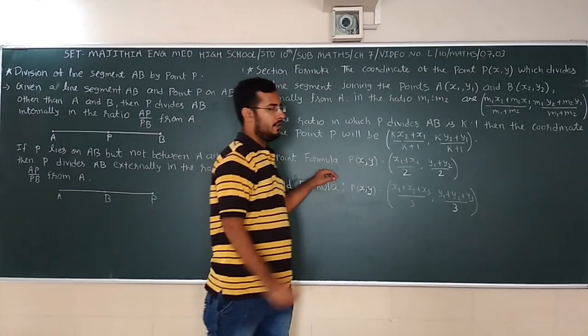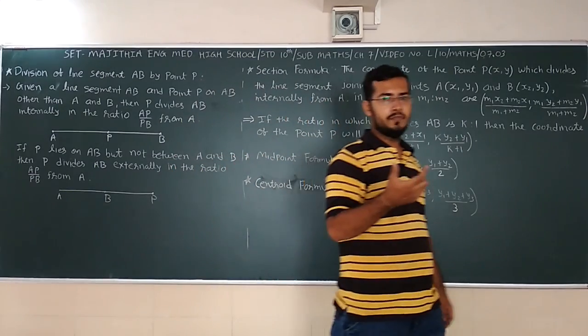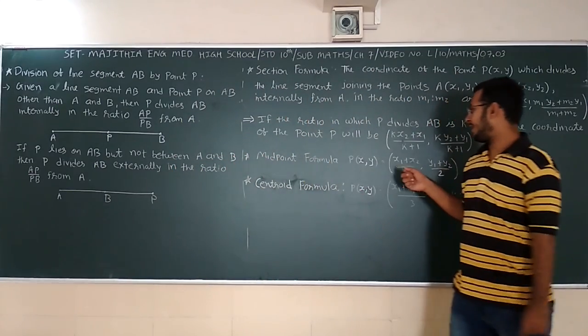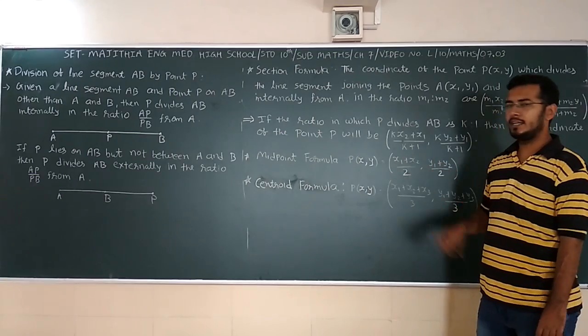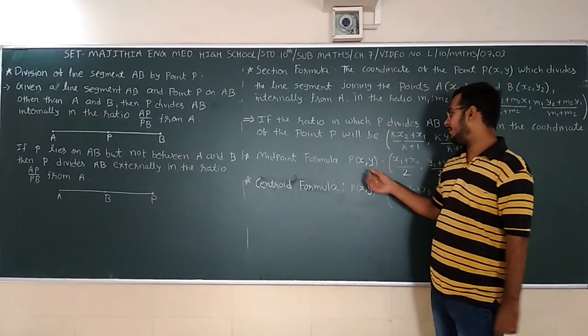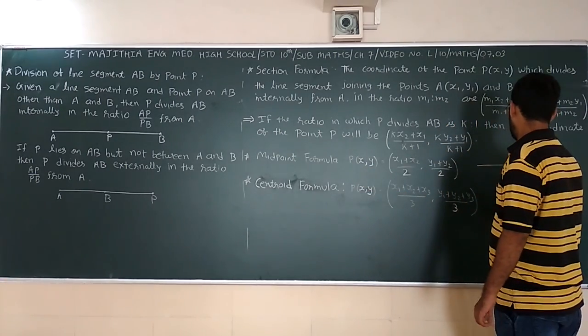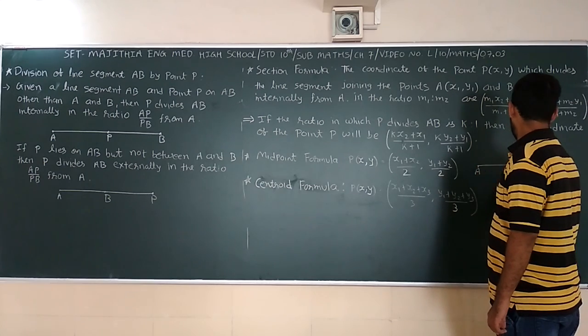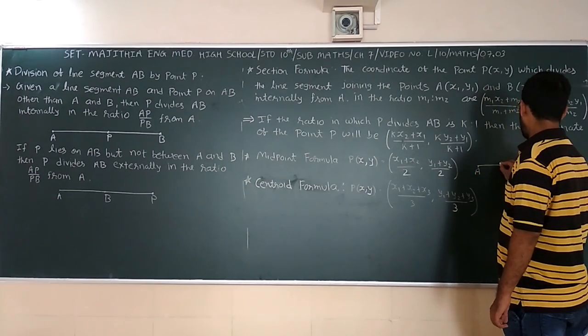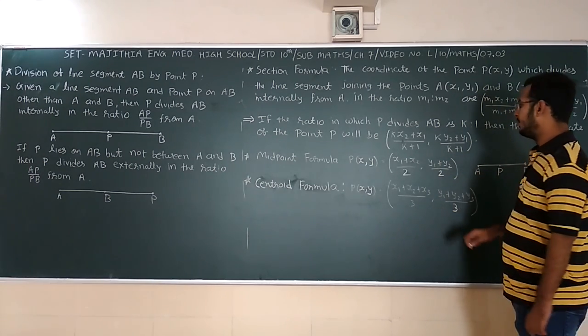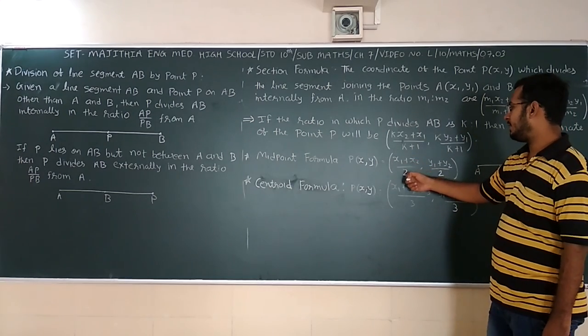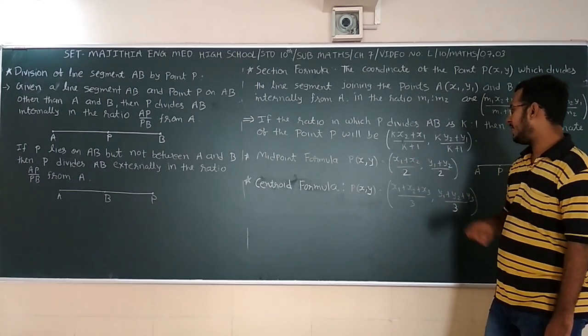Next, midpoint formula. We know that midpoint is in between. So there is two points X1,Y1 and X2,Y2. Then we have to find the midpoint like this, AP. Find the midpoint that is P. So the formula is X1 plus X2 by 2, Y1 plus Y2 by 2.